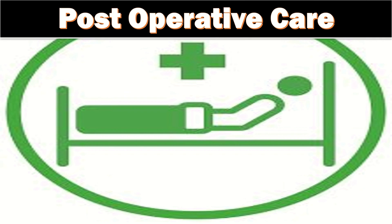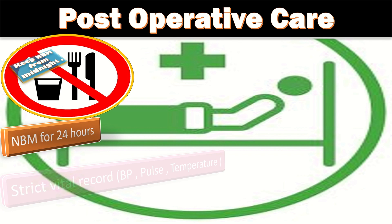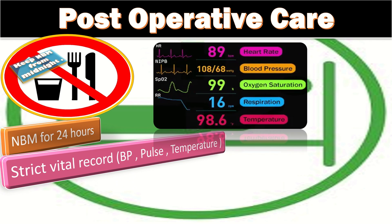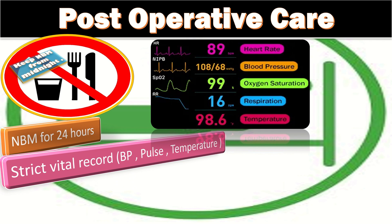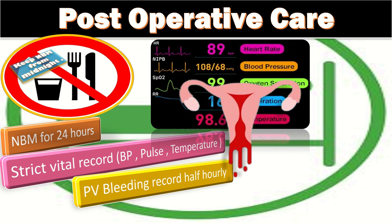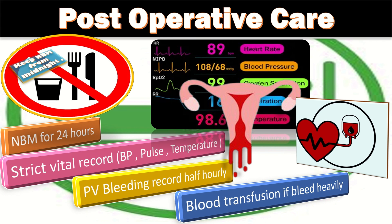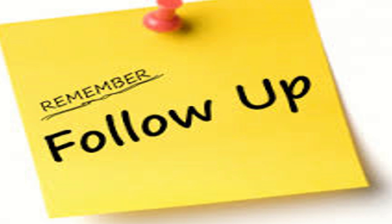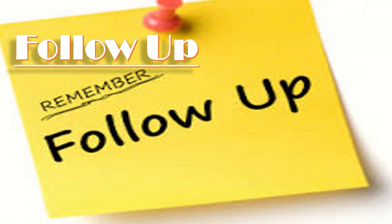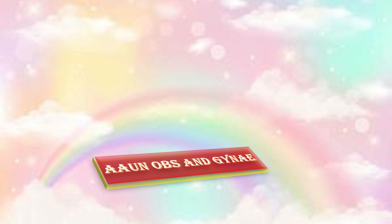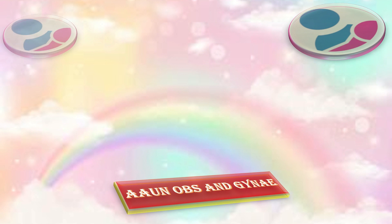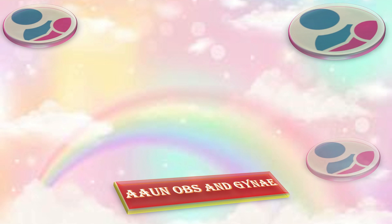For post-operative care, keep the patient nil by mouth for 24 hours. Maintain strict vital sign records including blood pressure, pulse, temperature, and PV bleeding recorded half-hourly. Arrange blood transfusion if the patient bleeds heavily. Once the patient is stable, she will be counselled about the need for long-term follow-up. That concludes the discussion on suction and evacuation.